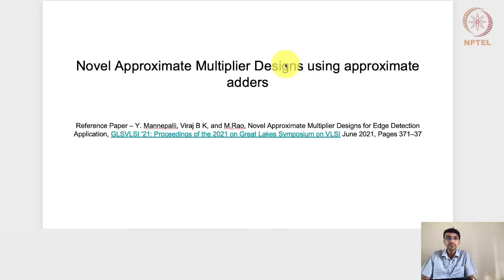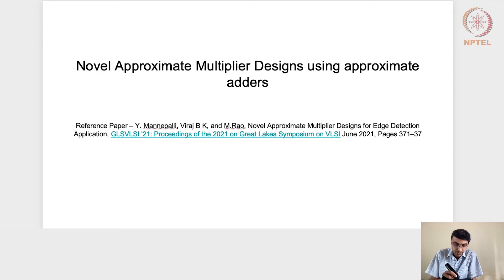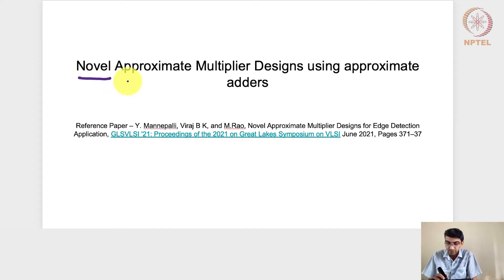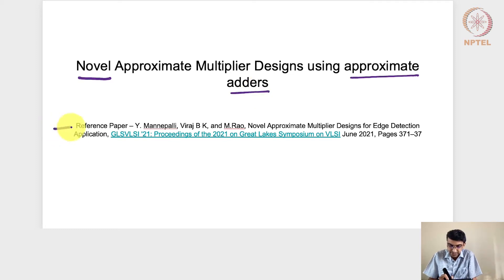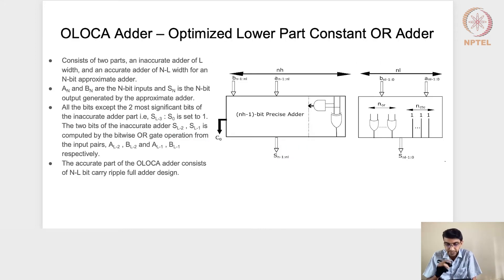Welcome to this lecture on approximate multiplier designs using approximate adders. This is a novel design — developed by myself and my research students — which differs from the previous lecture's approach using approximate compressors; here we use adders for partial product addition. The reference paper is titled 'Novel Approximate Multiplier Design for the Edge Detection Application,' available in the proceedings.